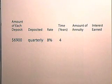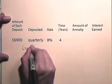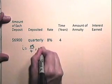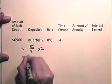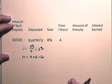Let's find the amount of the annuity in which $6,900 is deposited each quarter into an account paying 8% compounded quarterly, and these accounts are made for 4 years. The rate per period will be 8% divided by 4, which is 2%. And the number of periods will be 4 years times 4 quarters each year is 16 periods.